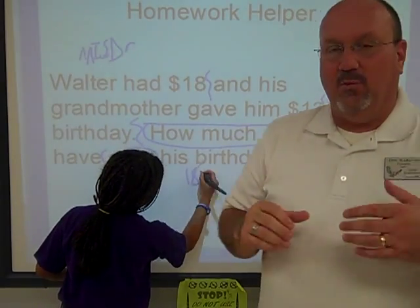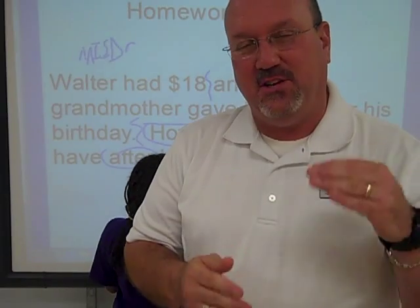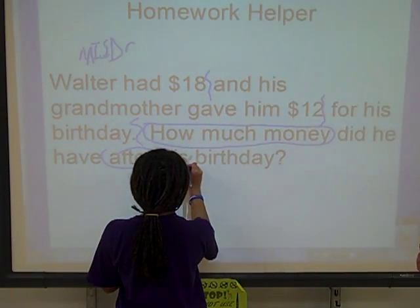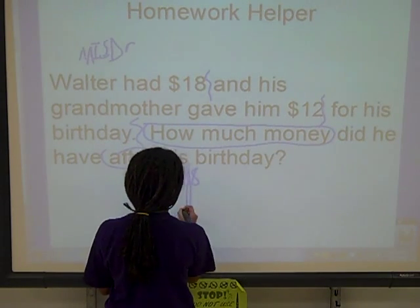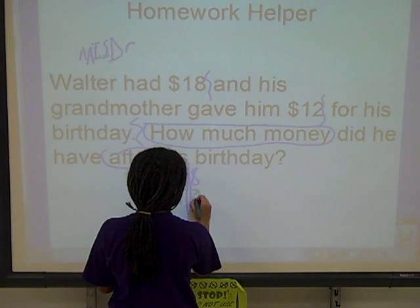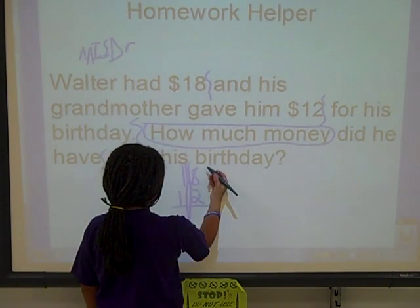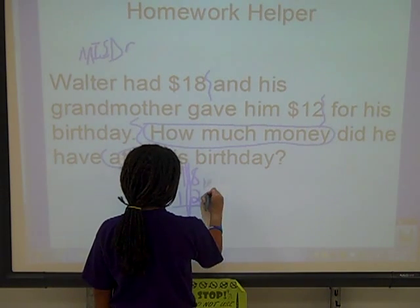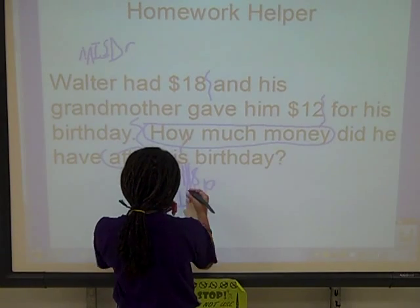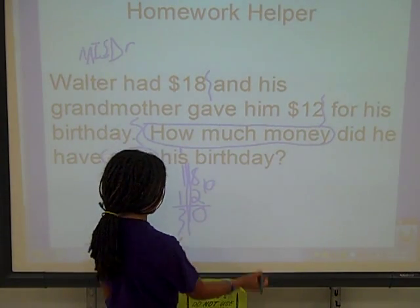$18. The whole purpose here is to change words into number sentences, so watch how Arianna does that. Put a line down here — $18, and I'm going to put $12. $8 plus $2 is going to be $10, so I'll drop my zero down and carry the $1. This is going to be $30.